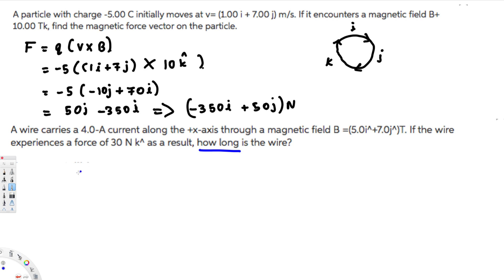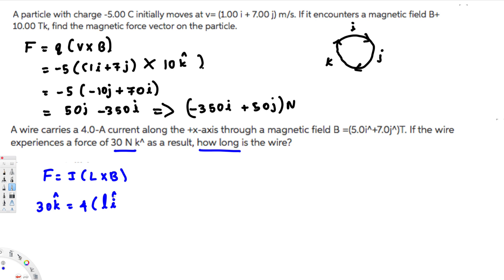The equation related to length is F = i(L × B). We know the force is 30 newtons in the k direction. The current is 4 amperes, and we have to find the length L. Since the wire is along the x-axis, L is going to be Li in the i direction, crossed with B, which is given as 5i plus 7j.